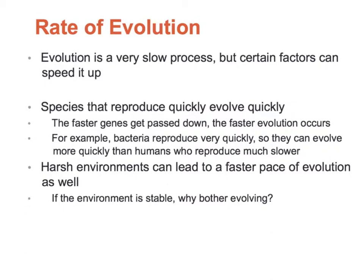The second thing that can impact the rate of evolution is harsh environments. Harsh environments can lead to a faster pace of evolution because there is stress put on the organism to overcome them. If there's no pressure to survive, you're not going to develop features that help you survive. Being exposed to very harsh environments puts pressure on organisms to develop adaptations that help them survive. This will be a short answer question on your test — describe the two things that can impact the rate of evolution: speed of reproduction and harsh environments.